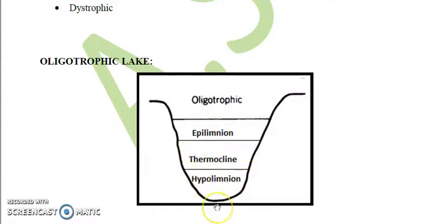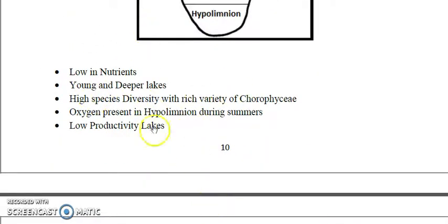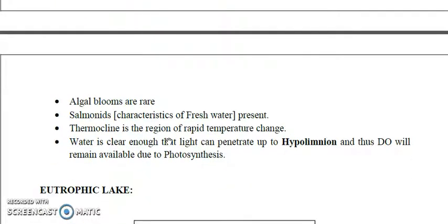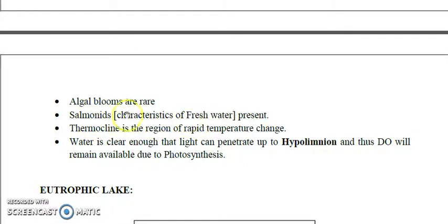In oligotrophic lakes, oxygen is present in the hypolimnion during summers. Although primary productivity — the rate of fixation of sunlight by phytoplankton — is low, the water is clear enough for sunlight to penetrate to the hypolimnion. Algal blooms are rare, and characteristic fish species include salmonoid fishes such as salmon and trout, typically found in freshwater.